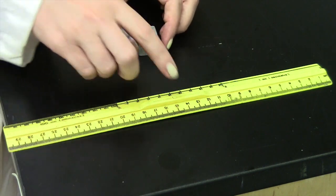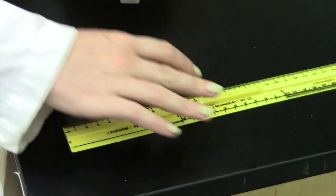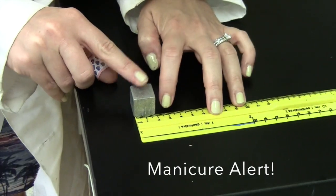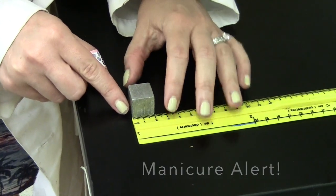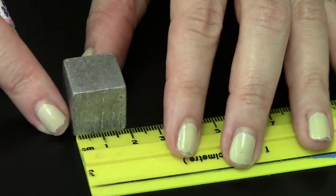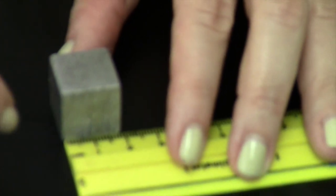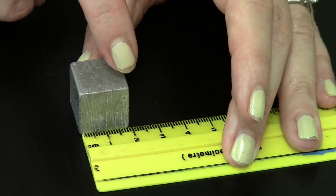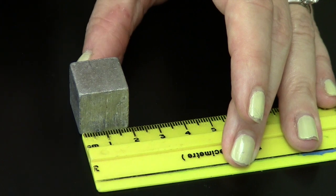Alright, so let's use a more precise scale. This centimeter measurement here. So again, I'm going to put the cube right at the beginning, and this time we know it's in between the 1.8 centimeter marking and the 1.9 centimeter marking.